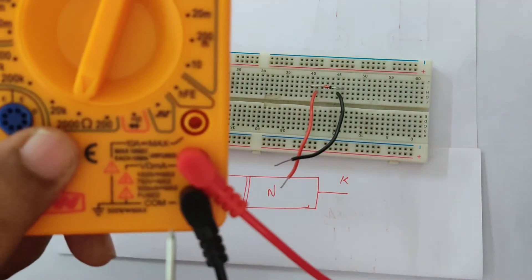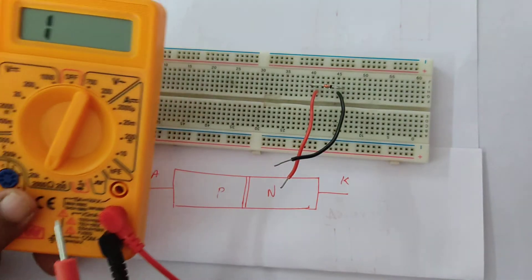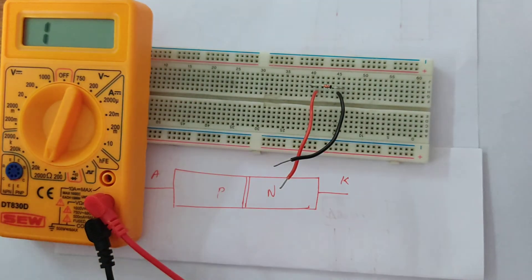The probes are as usual, black and red, black in the common and red in the range of measurement of resistance.